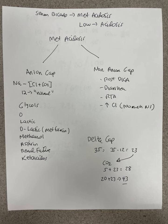R is renal failure. So if you have an anion gap metabolic acidosis, you look for one of these: ethylene glycol, lactic acid, renal failure, salicylate toxicity, methanol. Those are the main causes of an anion gap metabolic acidosis.